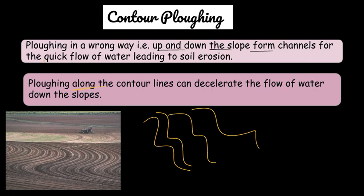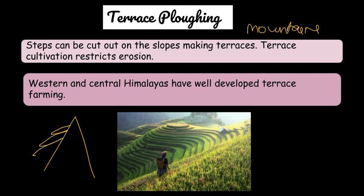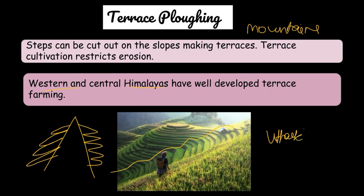Next is terrace plowing, which is mostly suitable for mountains. When you have a slope, you can build steps or stairs so that water flows down slowly without disturbing the soil. As mentioned in your NCERT, this is applicable to the western and central Himalayas.